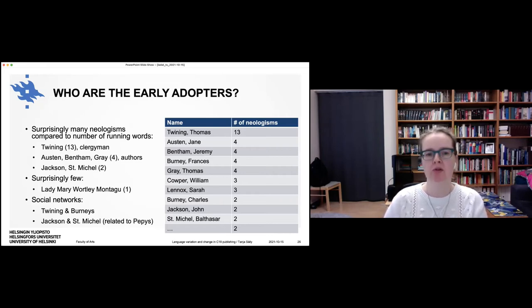So who are the early adopters was our question or one of them. And here you can see the top people and how many new words they used. So when we compare this to the number of running words that we have from them in the corpus, these are the people who use surprisingly many new words. Definitely Thomas Twining. He is a real weirdo. So he is one of my favorite people in the corpus. He is really creative with language. He is just a clergyman. But I mean, he's also a classical scholar. So he knows his Latin and Greek and so on. So he can do a lot with language. And of course, we have authors. So we have Jane Austen. We have Jeremy Bentham. We have Thomas Gray, which kind of makes sense. Okay. That they would use new words. Then we also have people from lower social rank. So we have John Jackson, who was, I think, a farmer's son. And then Balthazar St. Michel, who I think he was, he had something to do with the sea. Like he was a naval officer or maybe not even an officer, some sort of seaman. And then looking at people from whom we have a lot of words, sort of running words, but not a lot of new words. We have Lady Mary Wortley Montagu. So I don't know why she is conservative. We can also detect some social networks here. Or sort of, we know, for example, that Thomas Twining knew the Burneys. So Fanny Burney is an author and Charles Burney is her father and a music historian. And they were really close friends. And then also these John Jackson and Balthazar St. Michel knew each other. So they were both related to Samuel Pepys, who some of you might know, a famous diary writer.